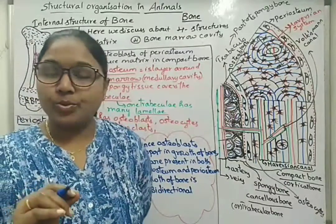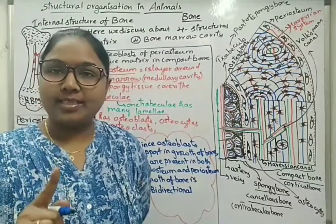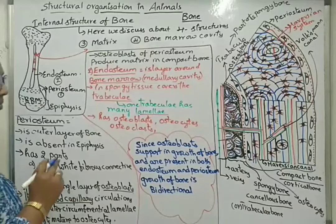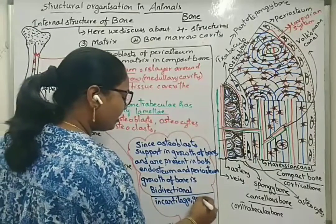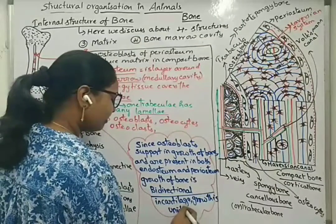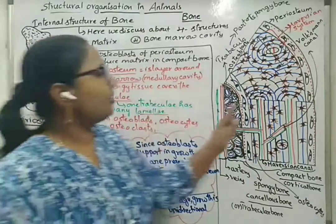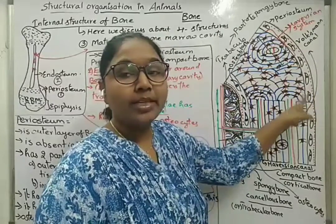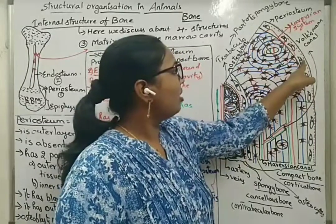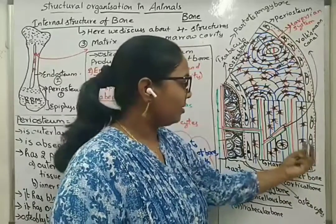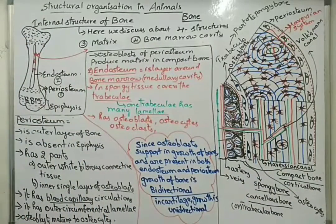In the case of cartilage, there is no endosteum or endochondrium — there is only perichondrium. So growth in cartilage is unidirectional, while growth in bone is bidirectional. You can see these red dotted structures, which are blood capillaries supplying nutrients in the periosteum and endosteum. Osteoblasts here support the growth of osteocytes and the creation of osteons or Haversian systems.